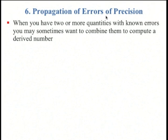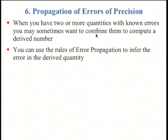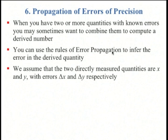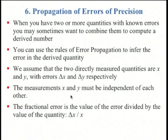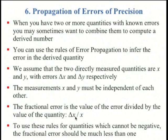Propagation of errors of precision. If you have two or more quantities for which you know the errors, you might want to combine them somehow and compute a derived number. You can use the rules for error propagation to infer the error of the derived quantity. Usually for these rules we say that we have x and y, and the errors are delta x and delta y in those two measurements. These measurements and their errors must be independent of each other, so you can't have the error or the measurement of y somehow depending on the measurement of x. Also we're going to assume that the fractional error, delta x divided by x, is much less than 1.